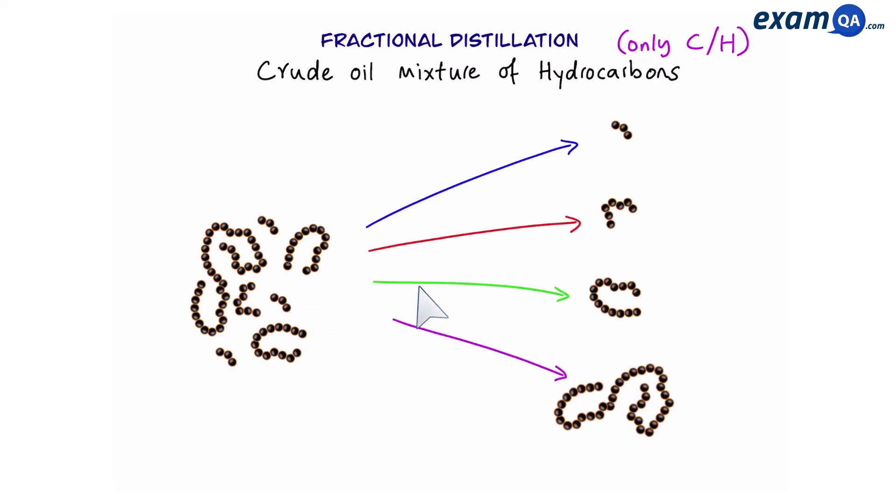Our goal in fractional distillation is to separate the different types of hydrocarbons and the main property that we're going to use about them is their boiling points. Long hydrocarbons have the highest boiling point because they have lots of intermolecular forces. However, short ones have the lowest boiling point because they have less intermolecular forces.